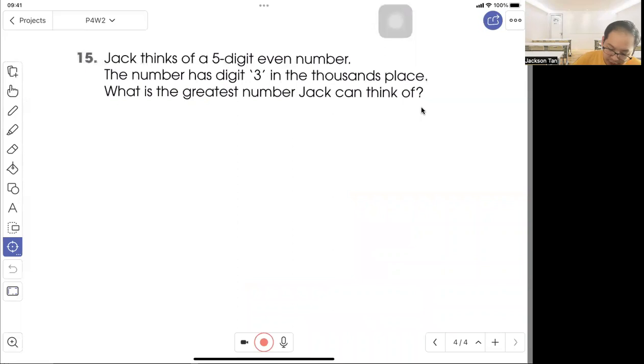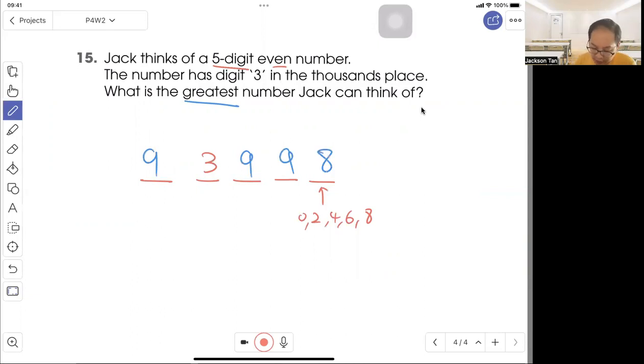Question 15: Jack thinks of a 5-digit even number. We have ones, tens, hundreds, thousands, and ten thousands. They want a 5-digit even number. The ones place can only have 0, 2, 4, 6, or 8. They say there's a 3 in the thousands place. What's the greatest number Jack can think of? For the greatest, we use 9, 9, 9. Here you cannot use 9, you have to use 8. So the answer is 93998.